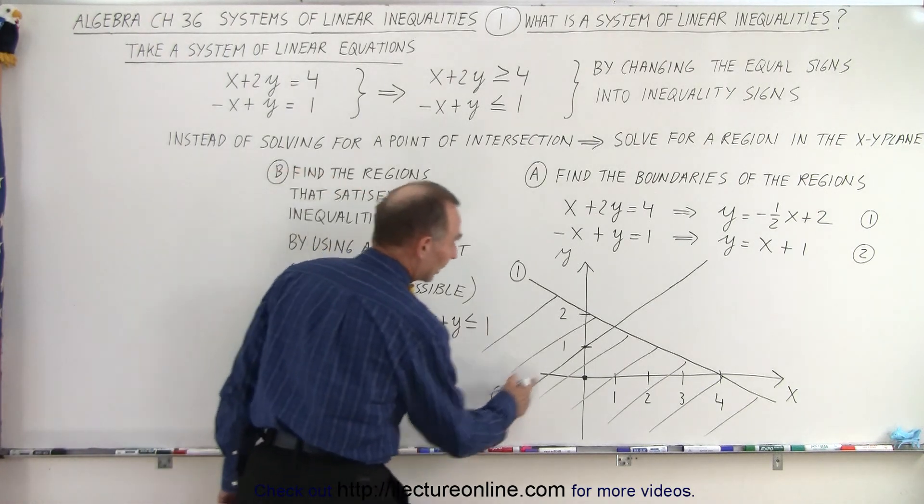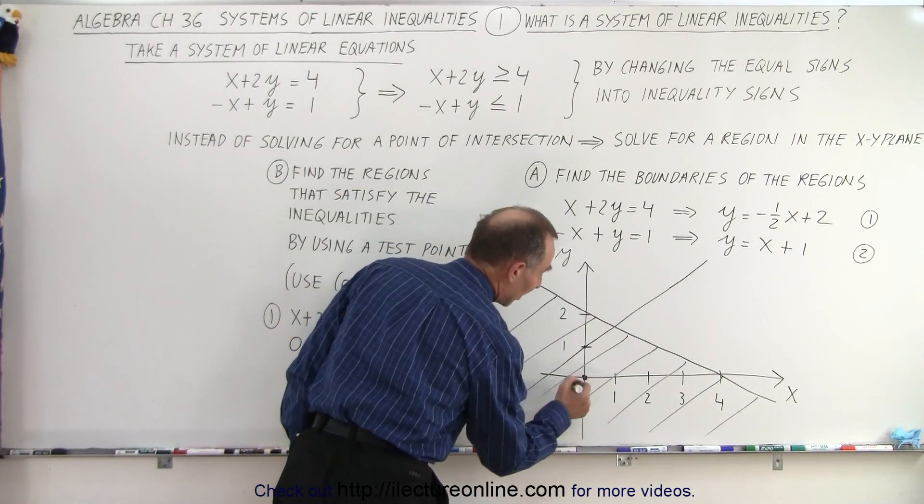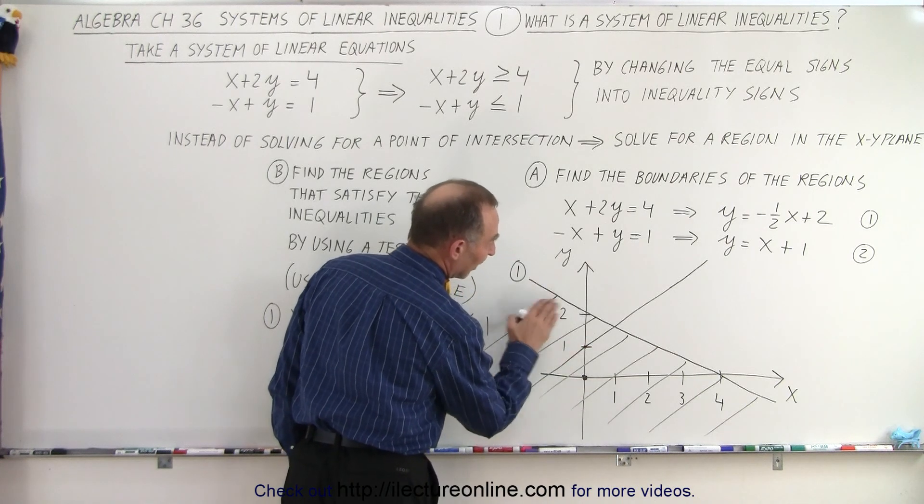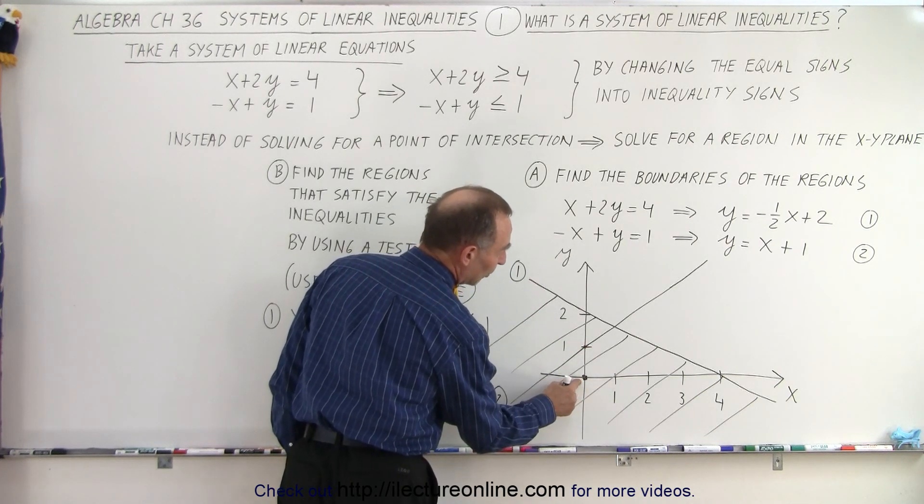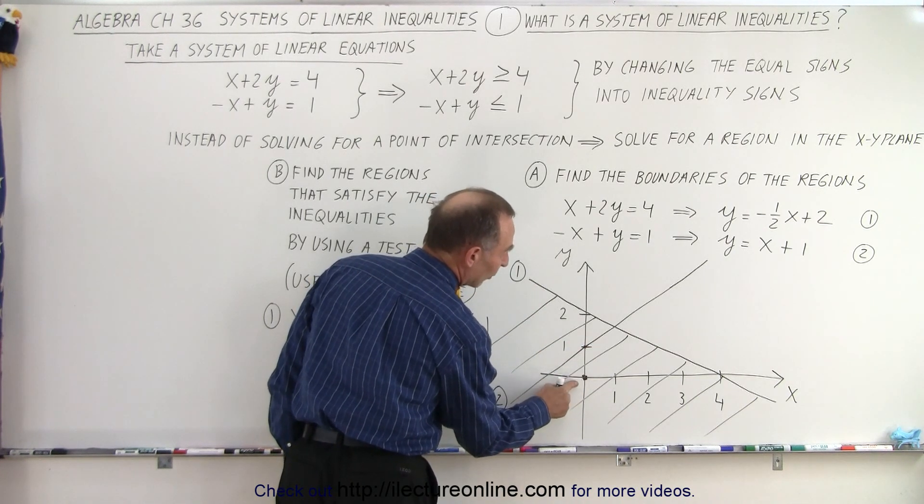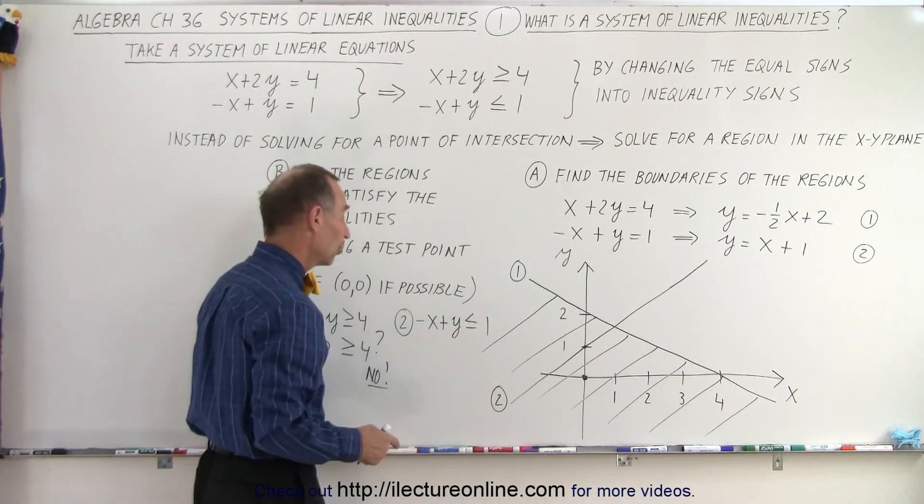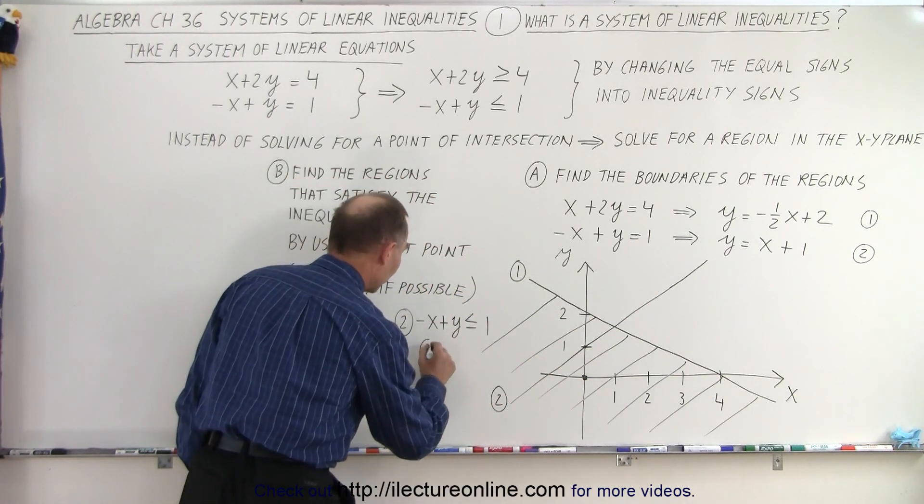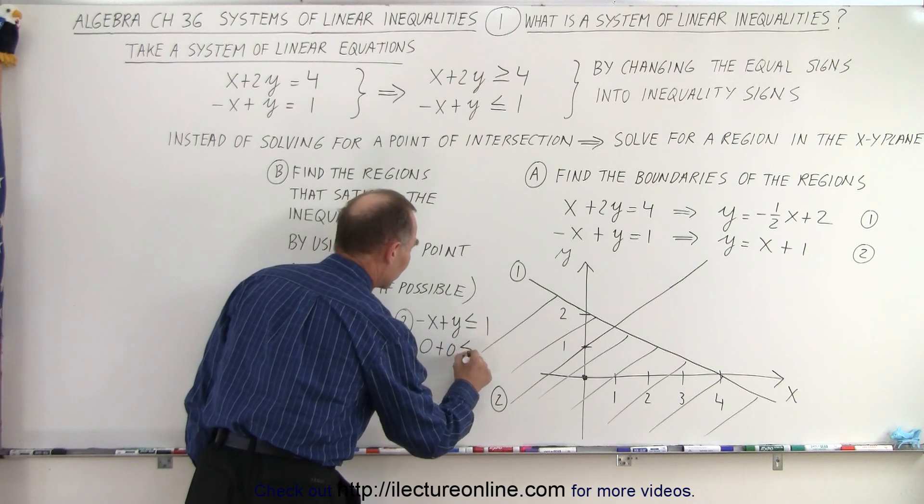So now we're going to take line number 2. Again, we pick the same point. Notice line number 2 divides the plane in two regions. Is this point on the correct side or the incorrect side of that line? So we plug in the values. 0 plus 0, is that less than or equal to 1?